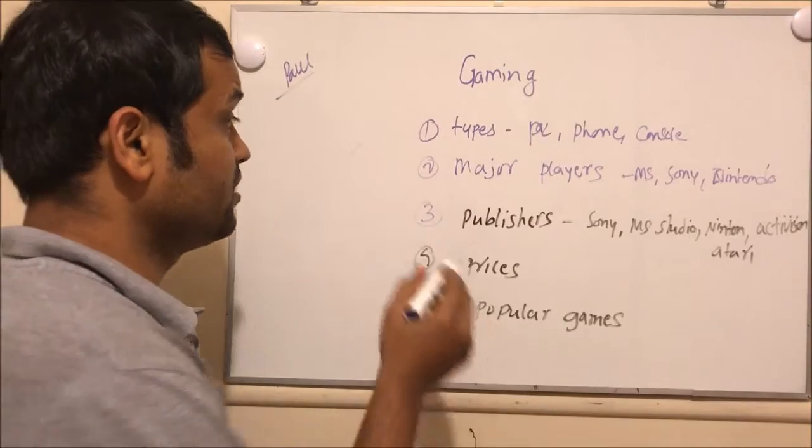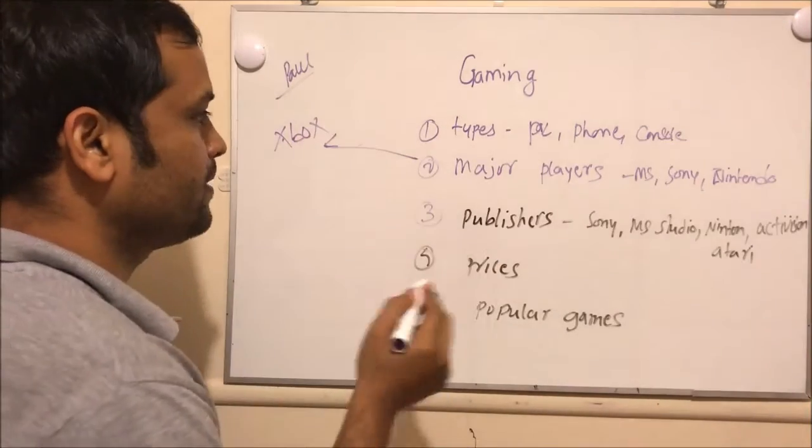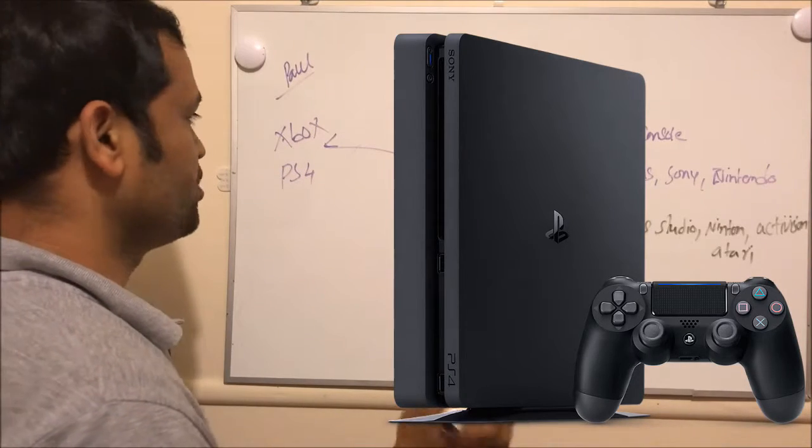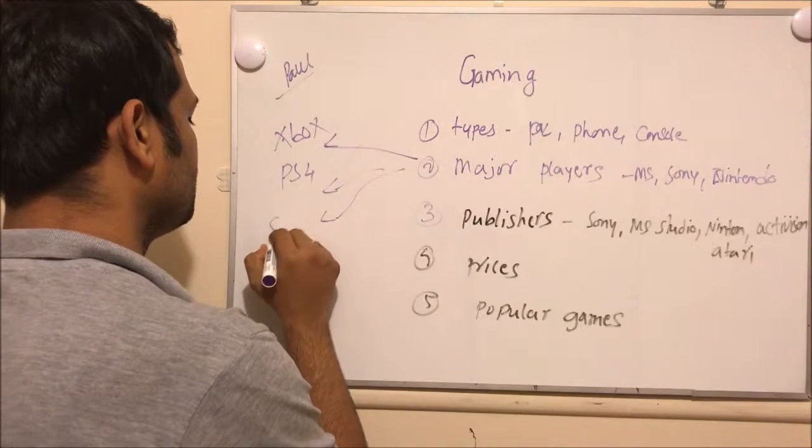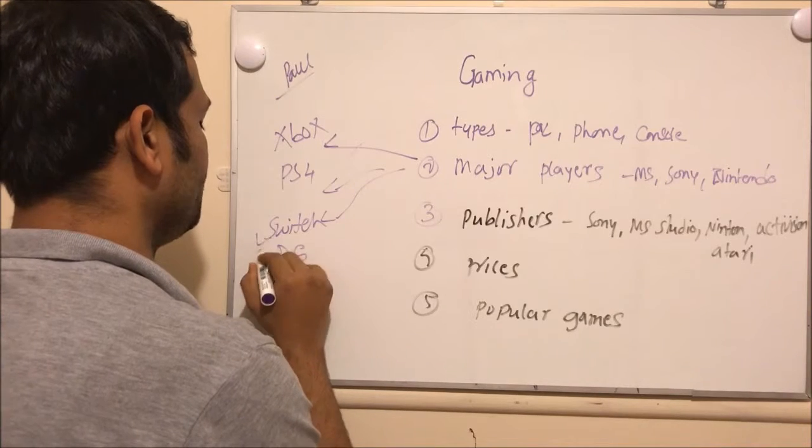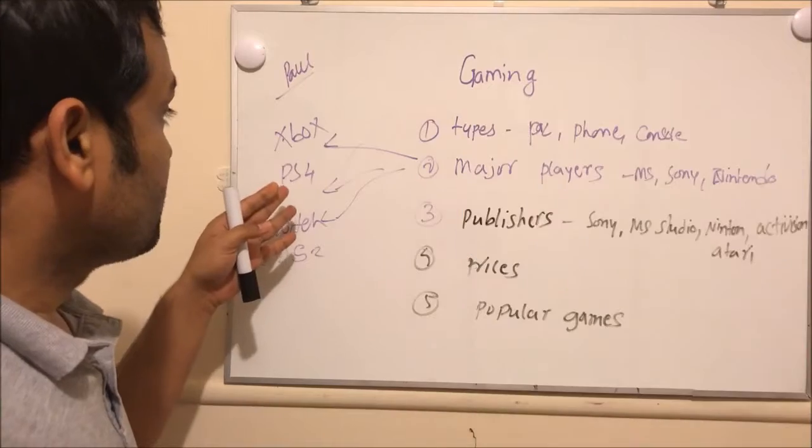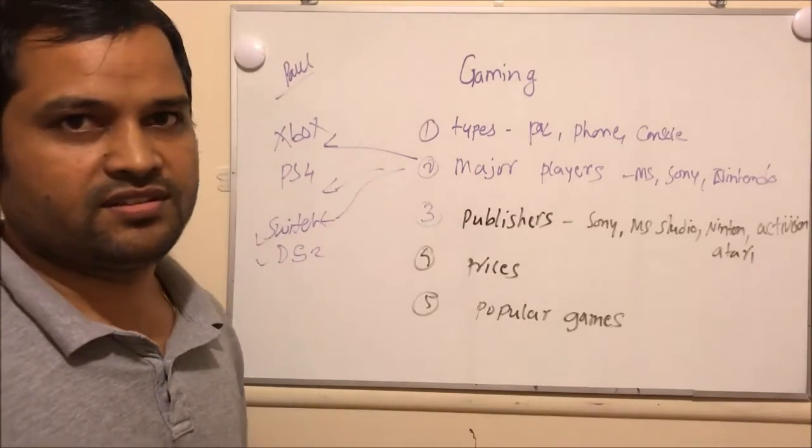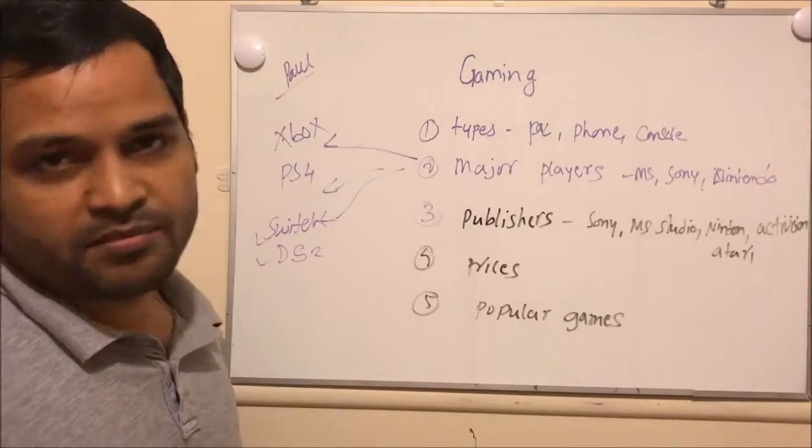Now let us take a look at what kind of consoles they create. Microsoft creates Xbox, then Sony has PS4, PlayStation they call it, and then Nintendo has got Switch or dual-screen DS2. These are the main console systems that these major players develop and send across the world. This PS4, Xbox, and Switch are all very popular among all the gamers in the world.